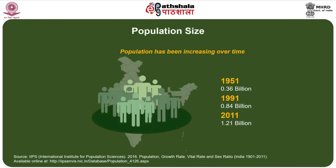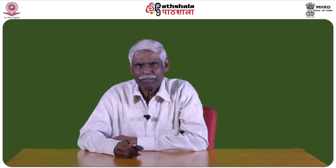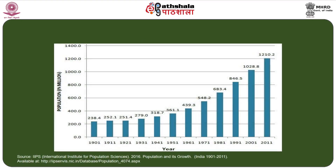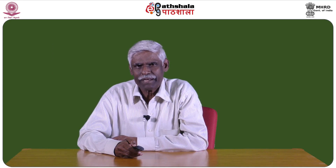If you look at the population size of India, it was 0.36 billion in 1951 and has steadily increased to 0.84 billion in 1991, moving further to 1.21 billion as per the 2011 census. The graph clearly depicts this steady increase, from around 238 million in 1901, up to 1028 million in 2001, and further to 1210 million in 2011, indicating the phase in which population growth is happening in the country.